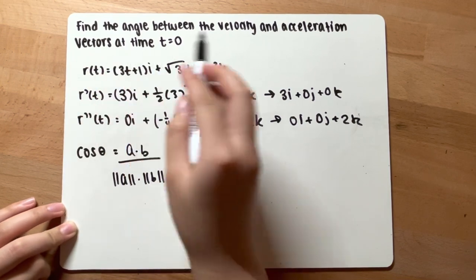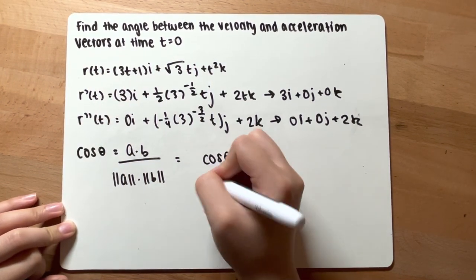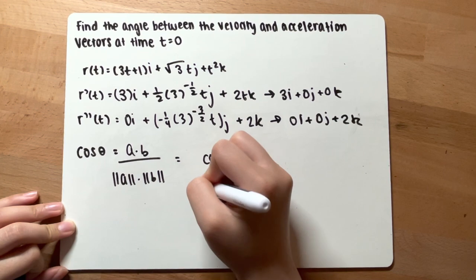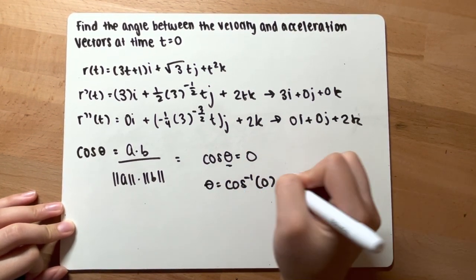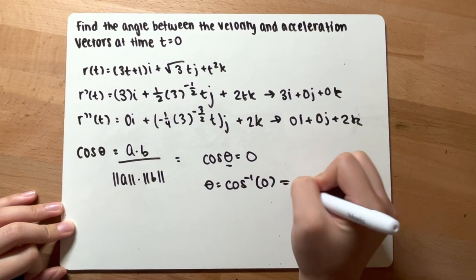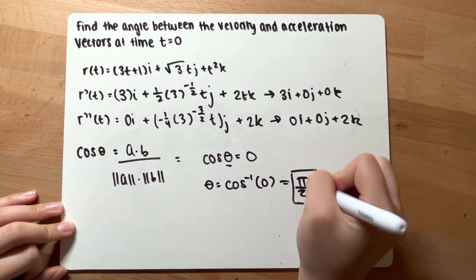However, you want to find the angle. So to find theta, you need to do arc cosine. So theta equals inverse cosine of 0, which gives you pi over 2. And this is the angle.